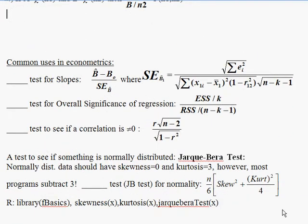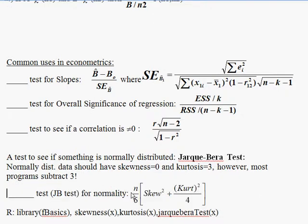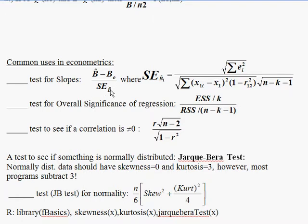Now to test yourself, here are four common statistical tests used in econometrics. First, if you're doing a test for slopes, the null hypothesis is that the slope is equal to b0. Usually we just choose 0 as b0. The calculation is your estimate minus some hypothesized value divided by the standard error.